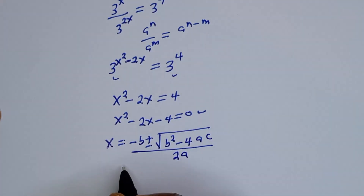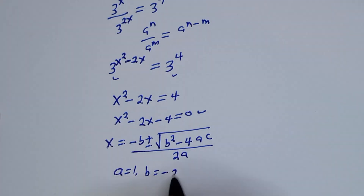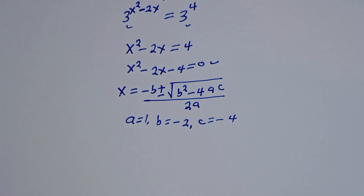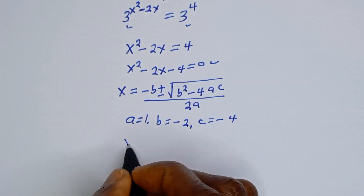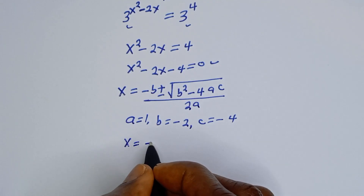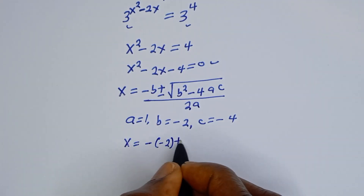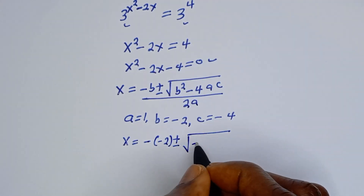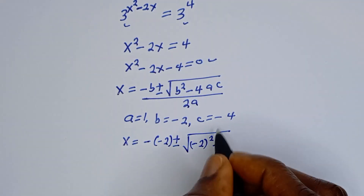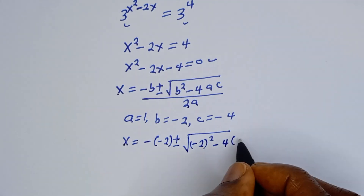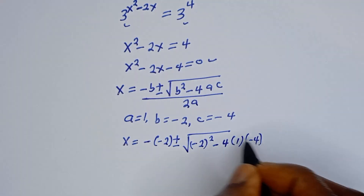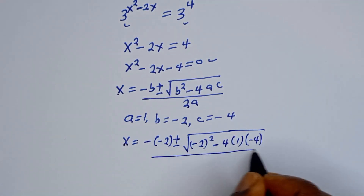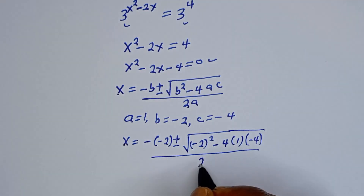From this equation, a is equal to 1, b is equal to negative 2, and c is equal to negative 4. So x is equal to negative bracket negative 2 plus or minus square root of negative 2 squared minus 4 multiplied by 1 multiplied by negative 4, over 2 multiplied by 1.